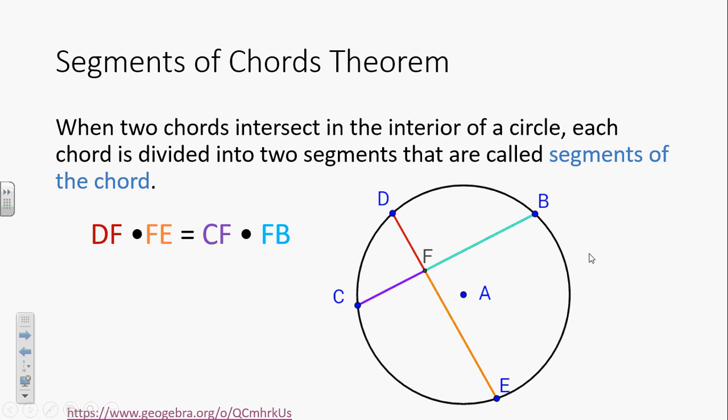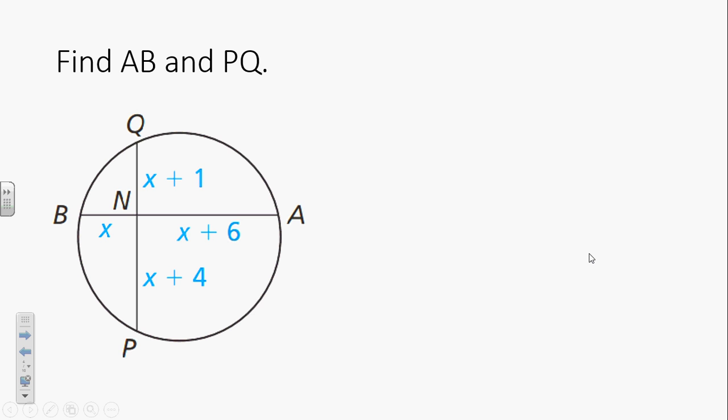And it's not very intuitive until you explore it a little bit. So what it's saying is if I have two chords intersecting inside of a circle, then one segment of one chord times its other segment is going to be equal to the other chord's first segment times its second segment. The distance between D and F times the distance between F and E is equal to the distance between C and F times the distance between F and B. So here's our first example. We want to be able to find the distance between A and B and the distance between P and Q.